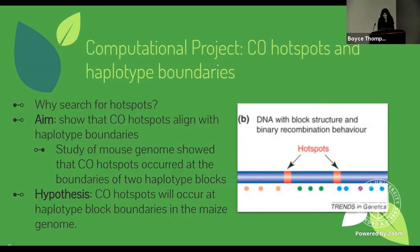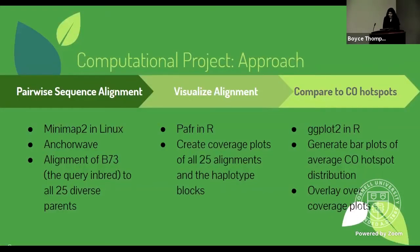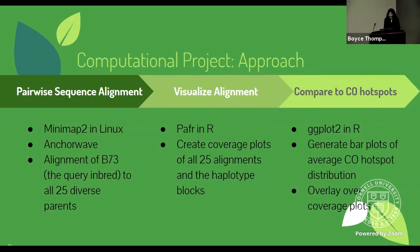To address this question, we first did a pairwise sequence alignment. We originally used Minimap2, a program in Linux, and then switched to AnchorWave. With this step, we produced an alignment of B73 — the query inbred — to all 25 diverse parents. Using these alignments, we visualized them using a package in R known as PafR, creating coverage plots of all 25 alignments and their haplotype blocks. The last step was to compare these coverage plots to the crossover hotspot graphs, which we generated using ggplot2 in R, producing plots of the average crossover hotspot distribution. Our goal is to overlay these over the coverage plots to see if the hotspots align with the block boundaries.